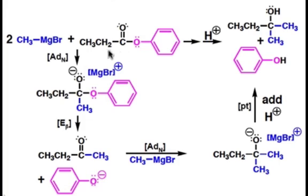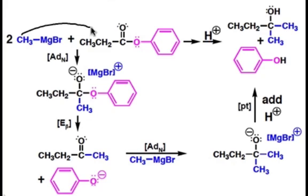When this ester is treated with two equivalents of methyl magnesium bromide, it can be converted into the tertiary alcohol shown here. The process by which this takes place is first nucleophilic attack by the Grignard reagent to the carbonyl carbon, which kicks up a lone pair of electrons to create the tetrahedral intermediate shown here.